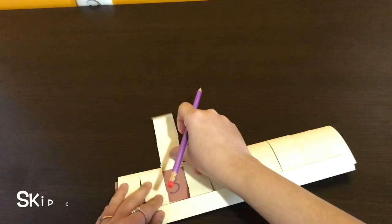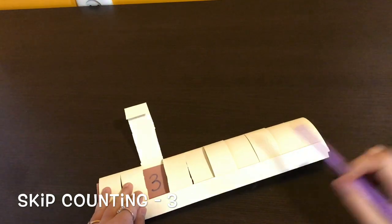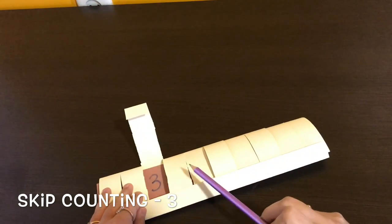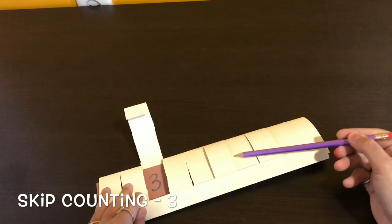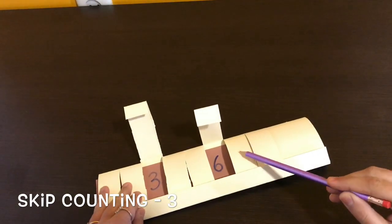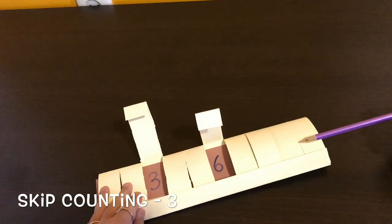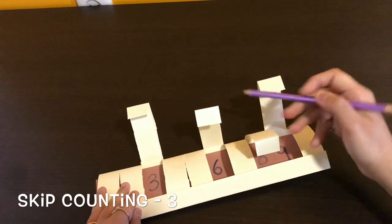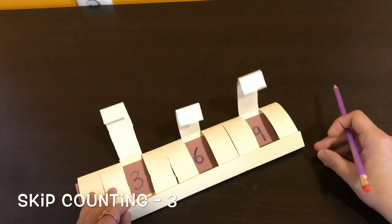Same way, if you want to do skip counting for number 3. So number 3, and now skip count with 3. 1, 2, 3. Lift the flap, number 6. 1, 2, 3. Lift the flap, and I get number 9.